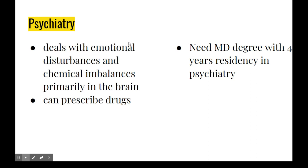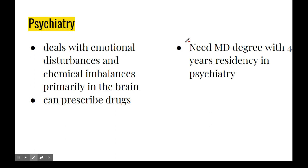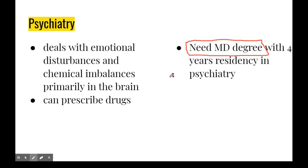A couple of ones that you should know. One: psychiatry. A psychiatrist is different than a psychologist. The biggie is that a psychiatrist needs an MD degree. You've got to know that — four years of residency afterwards. You're going to be about 30 before you actually get to start practicing. Psychiatry is definitely biological and cognitive — it's approaching chemical imbalances and emotional disturbances and trying to deal with it from a biological and medical level.